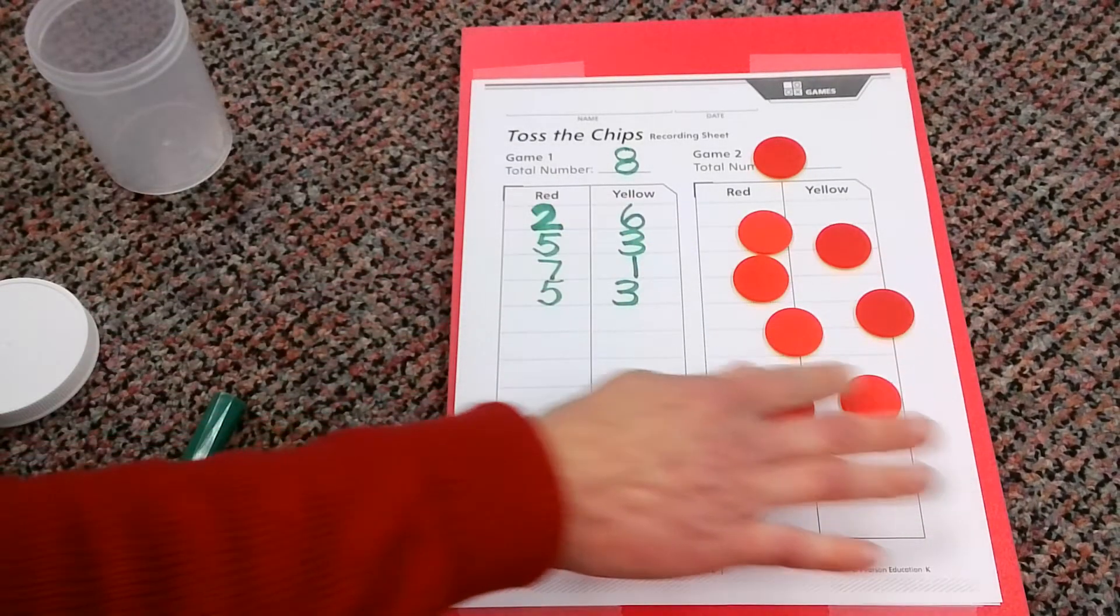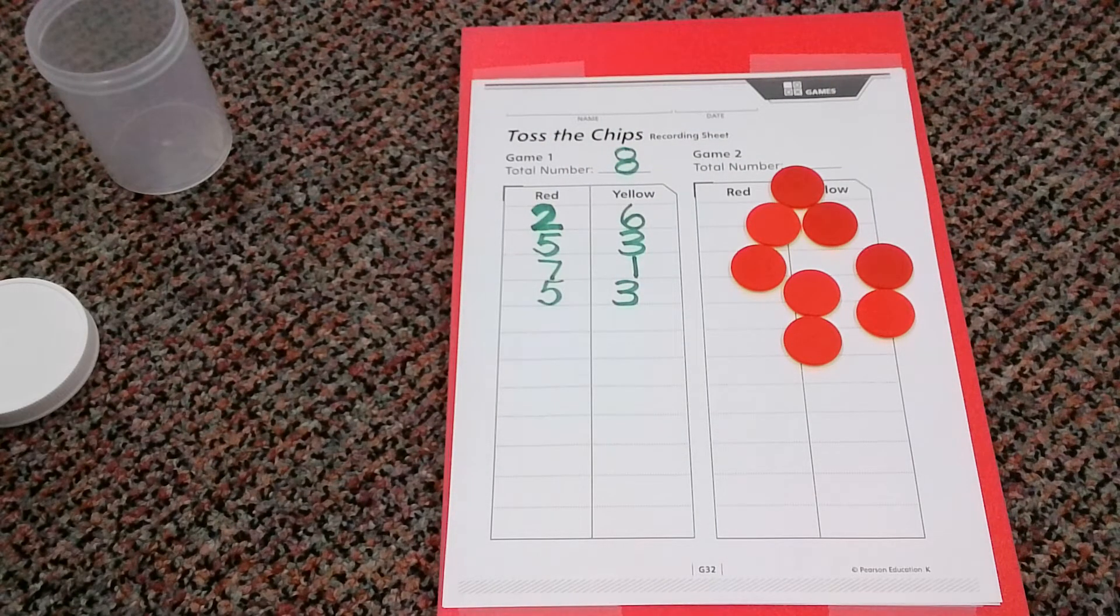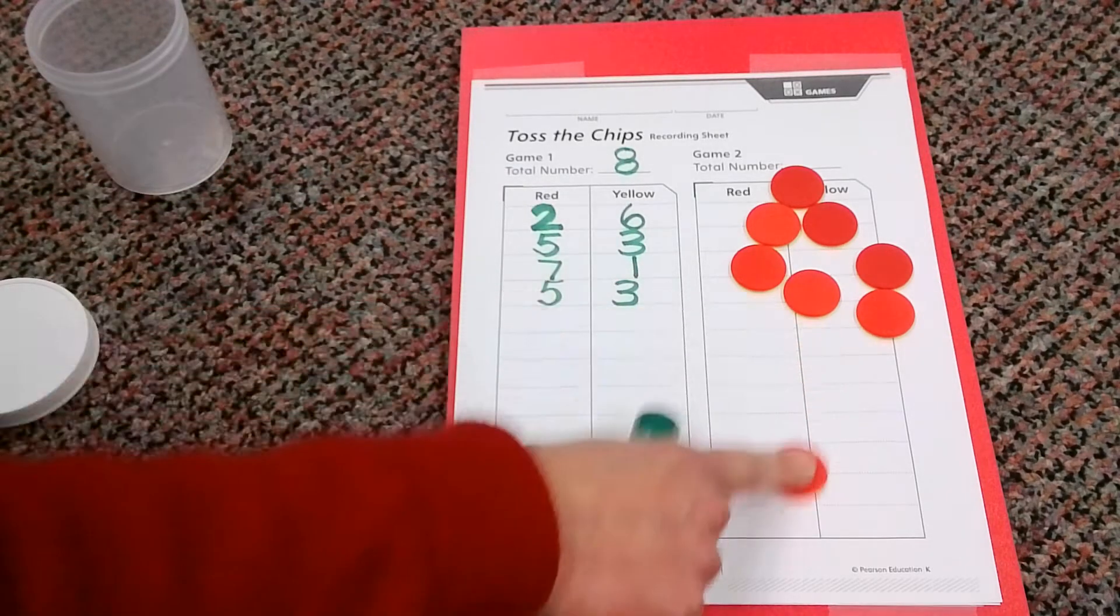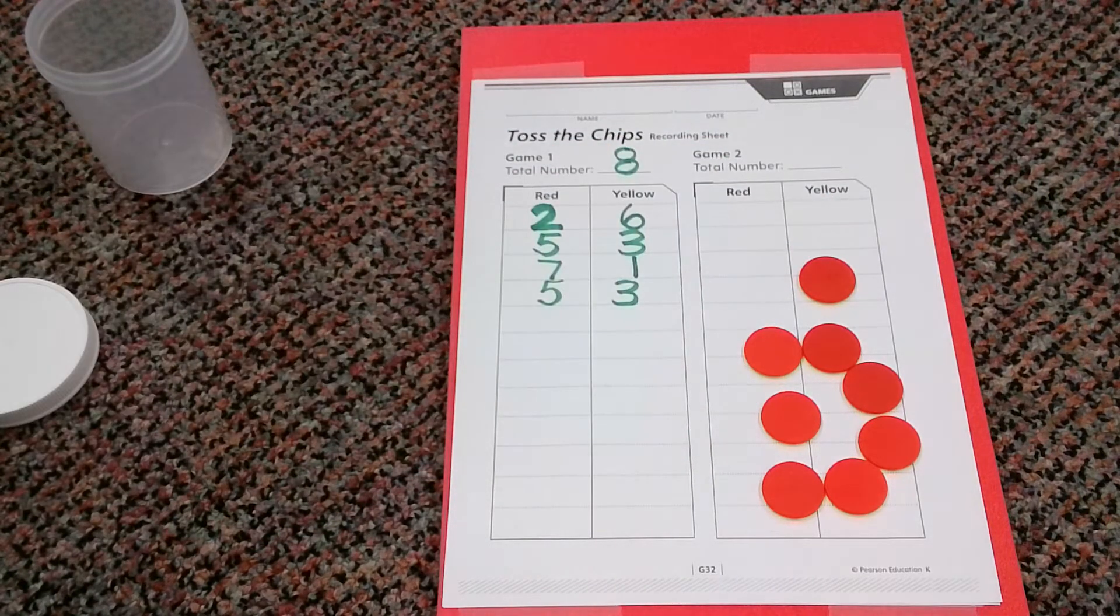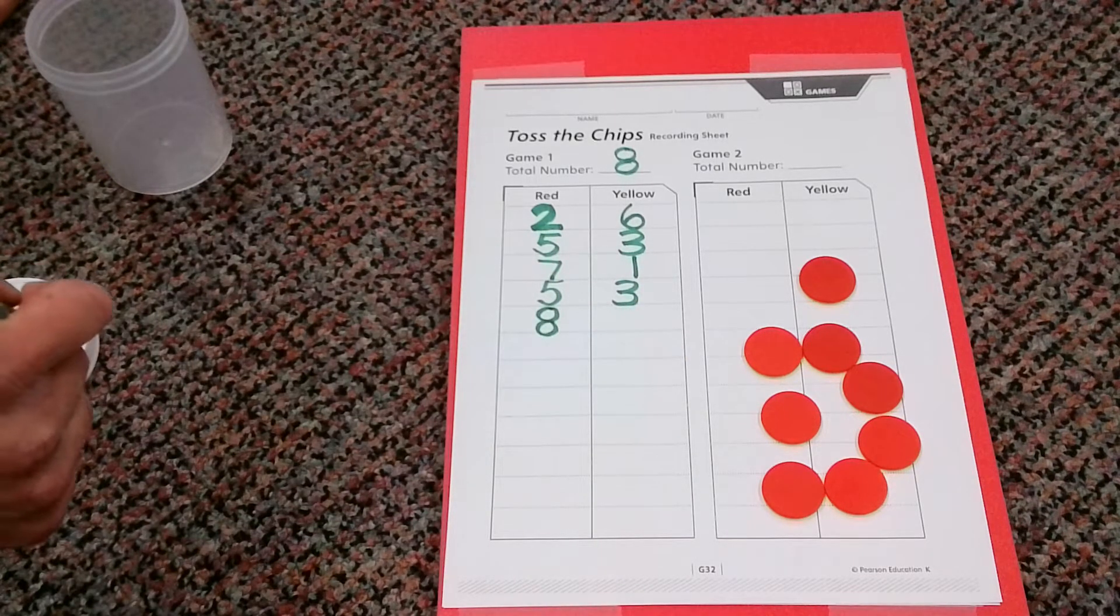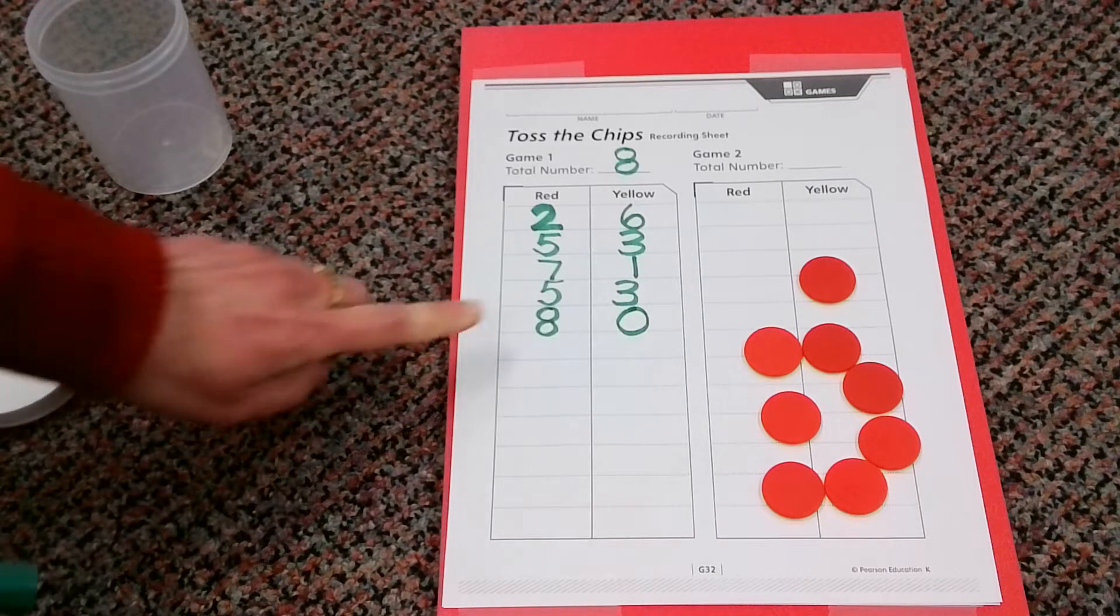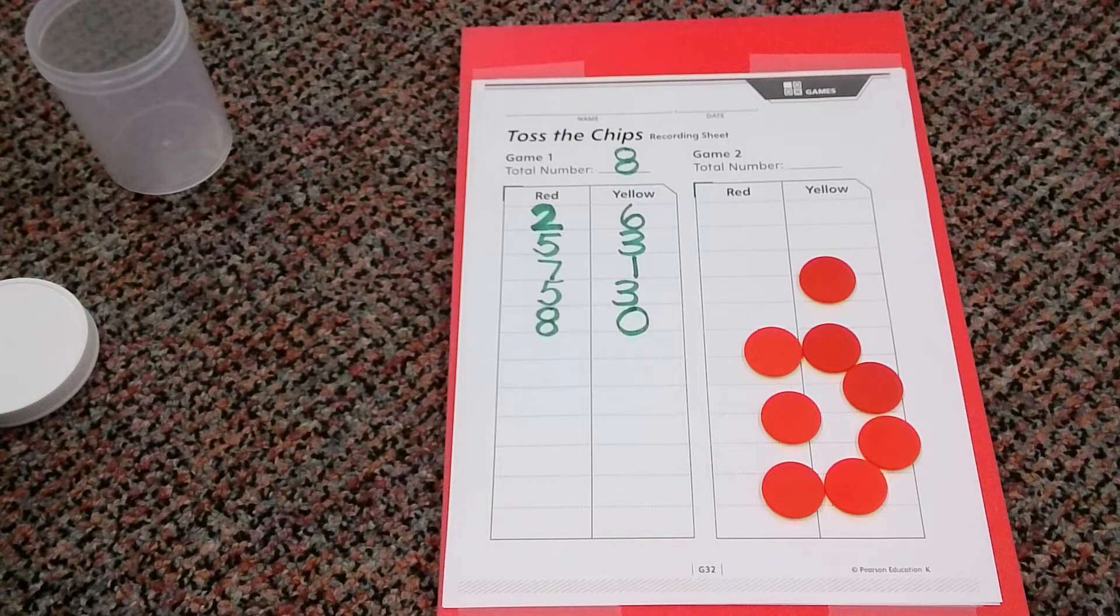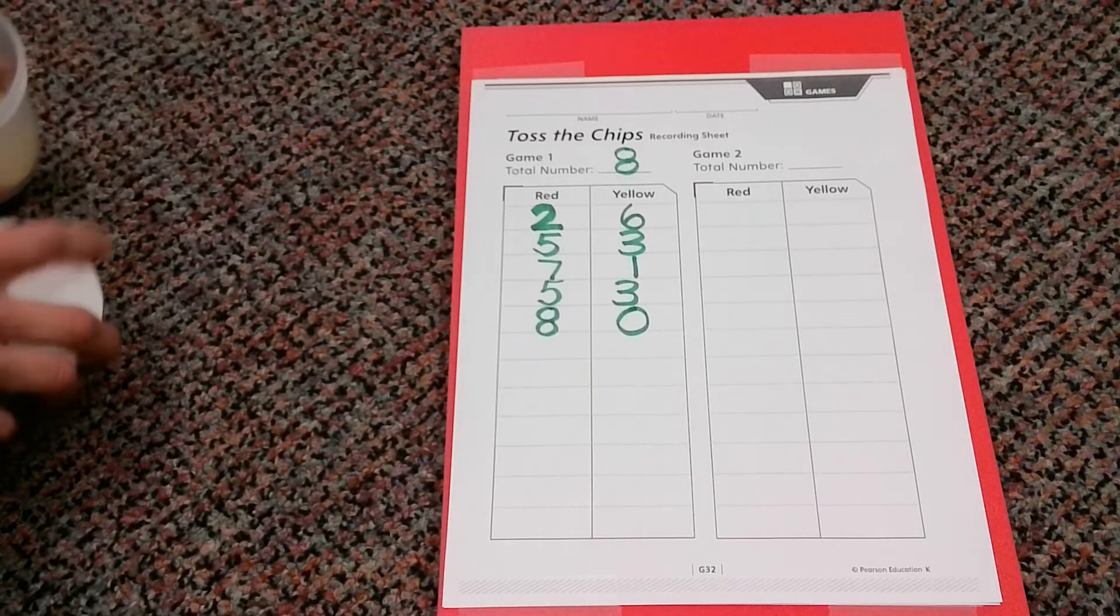Oh my goodness, look at this. Wow, we only have one color this time. Let's count all our reds. One, two, three, four, five, six, seven, eight. And how many yellows? Oh, just zero. You didn't get any. But this is a cool combination because you have eight plus zero equals eight. We could use zeros in our combinations. Let's do a few more.